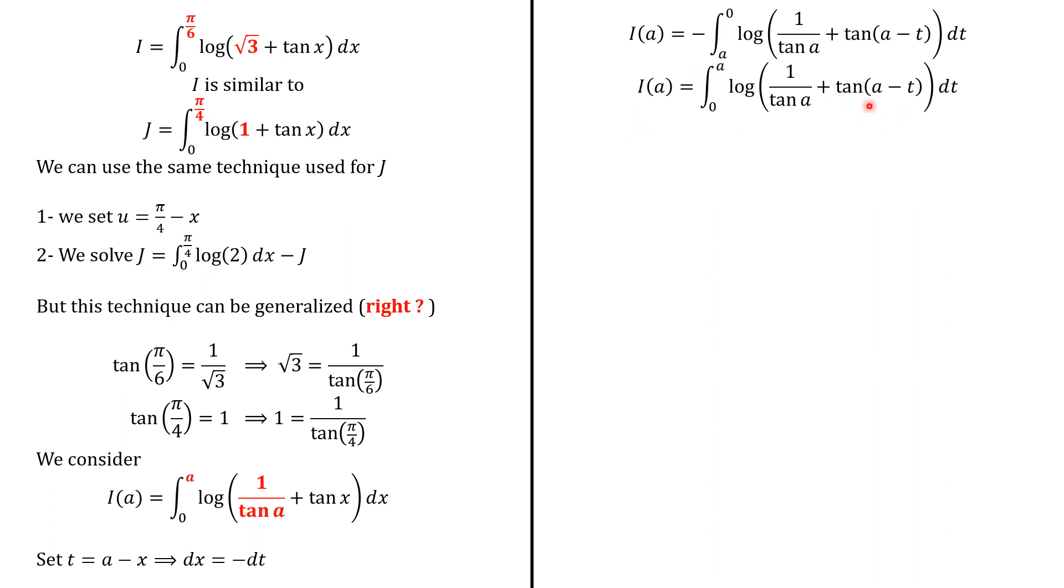Applying one of the formulas of tangent, we know that tangent of a minus t is defined as follows: tangent of a minus tangent of t over 1 plus tangent of a multiplied by tangent of t. So we perform the computations patiently.